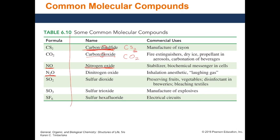Let's write the name for N2O. The first non-metal is nitrogen — how many? Two, so 'dinitrogen'. Then oxygen becomes 'oxide' — how many? Nothing is written, meaning just one, so it would be 'monoxide'. The full name is 'dinitrogen monoxide'. The table shows 'dinitrogen oxide', which is also acceptable, but I suggest keeping 'mono' to follow the rule.